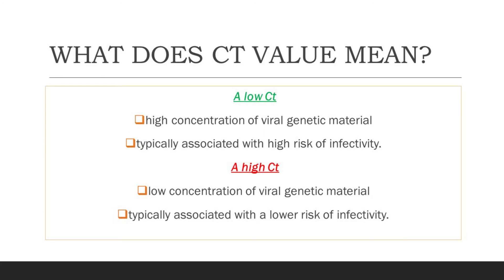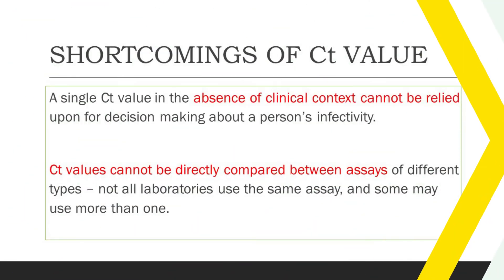If a person has a low CT value, it means there is a high concentration of viral genetic material in the patient sample, and it is typically associated with a high risk of infectivity. Conversely, if a patient has a high CT value, it means there is a low concentration of viral genetic material, which is associated with a low risk of infectivity. The CT value cannot be relied upon as a single value to determine the patient's infectivity.